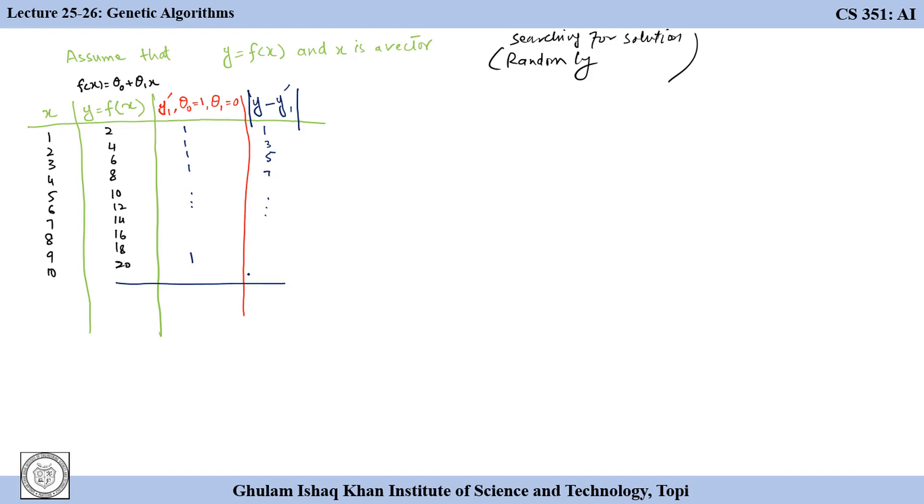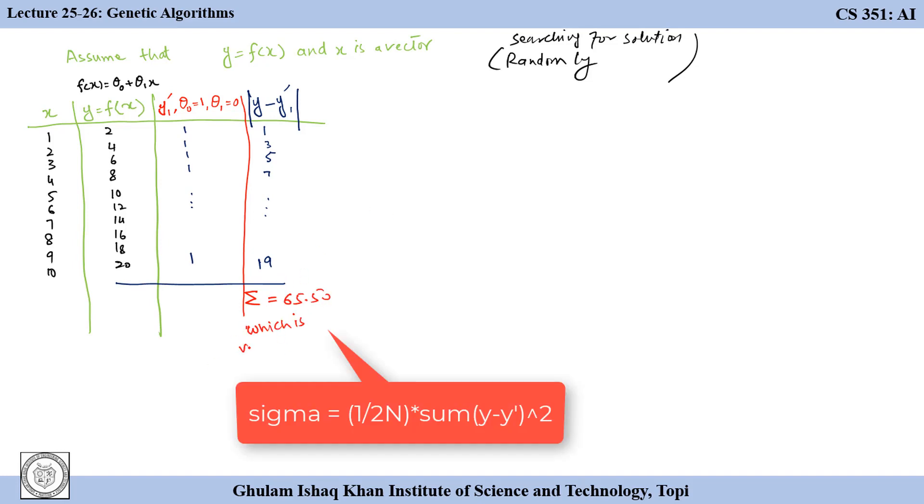The difference can be computed as sum of absolute difference or sum of square difference. Whichever metric you follow is okay. If we compute the sum it is 65.50.